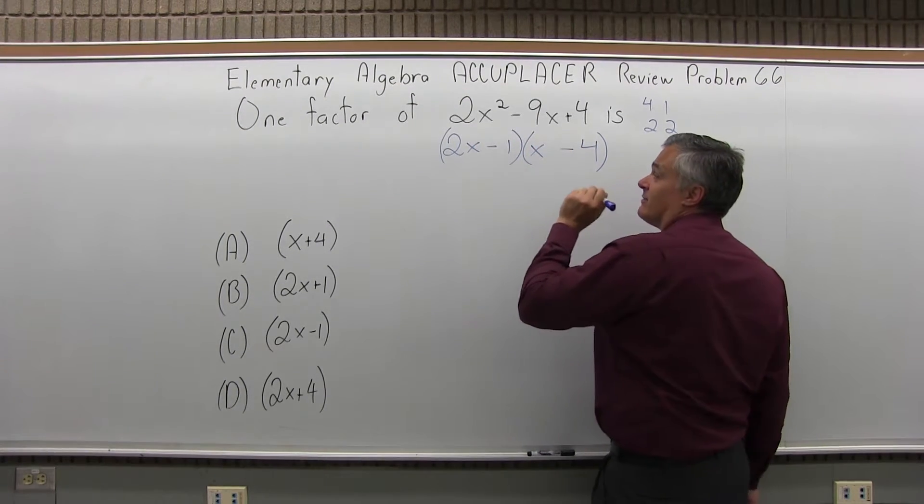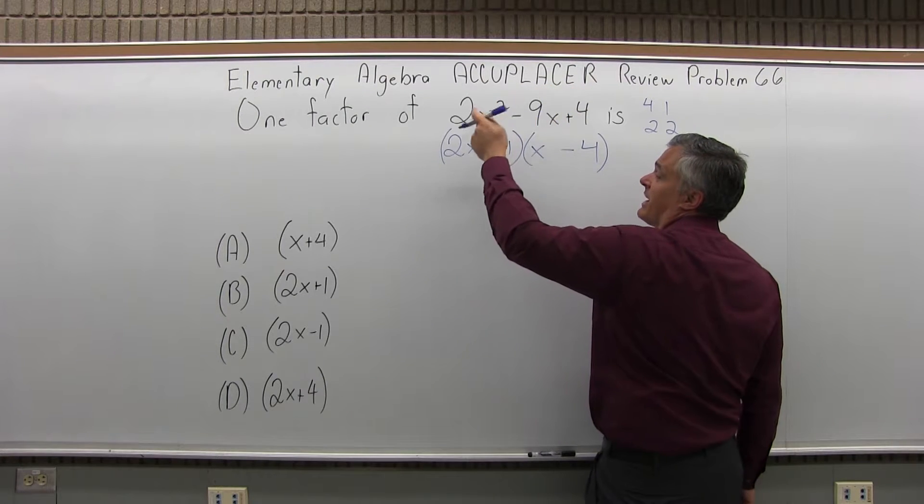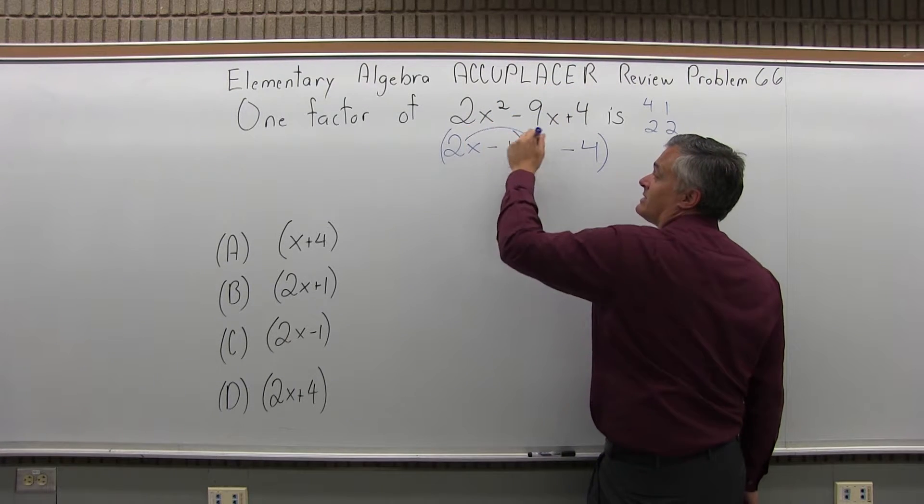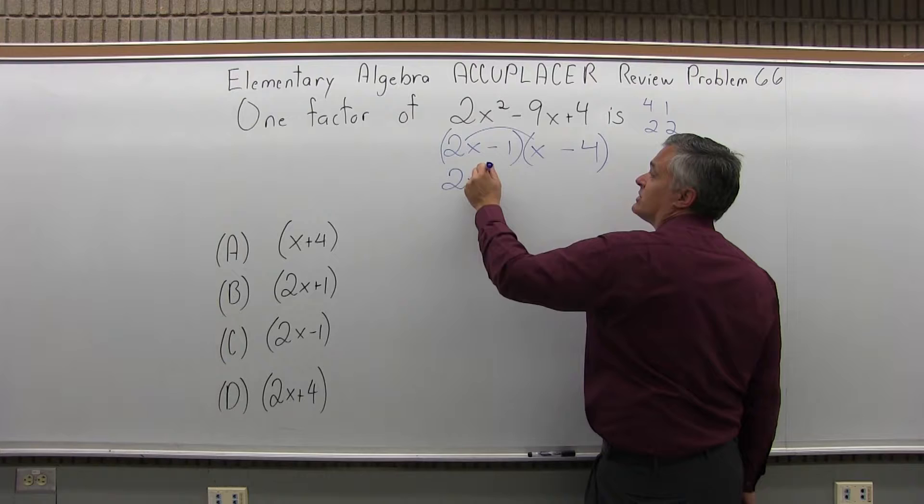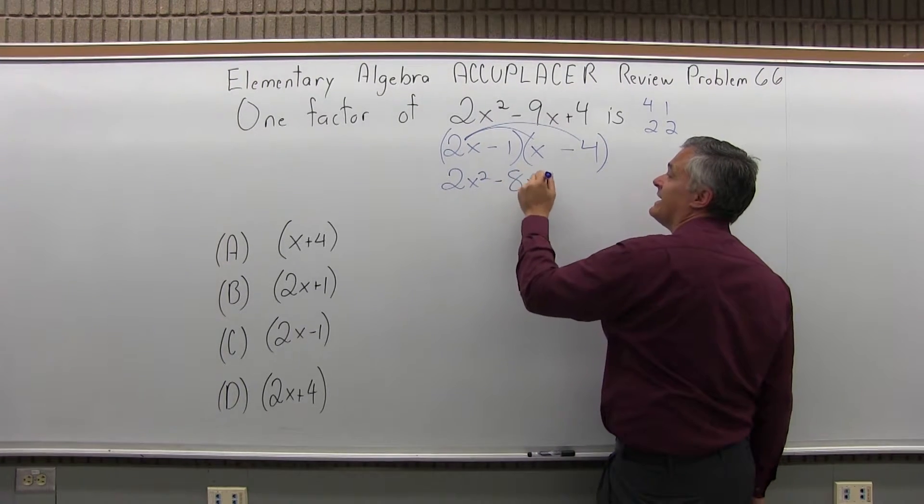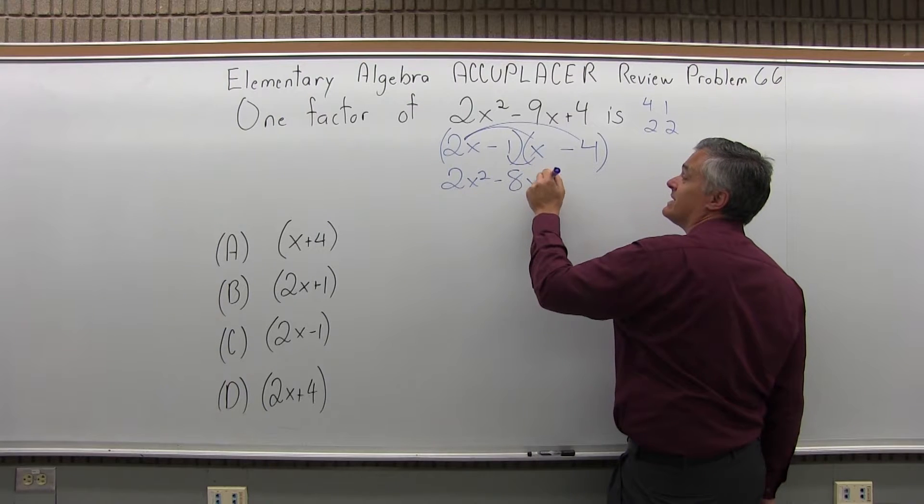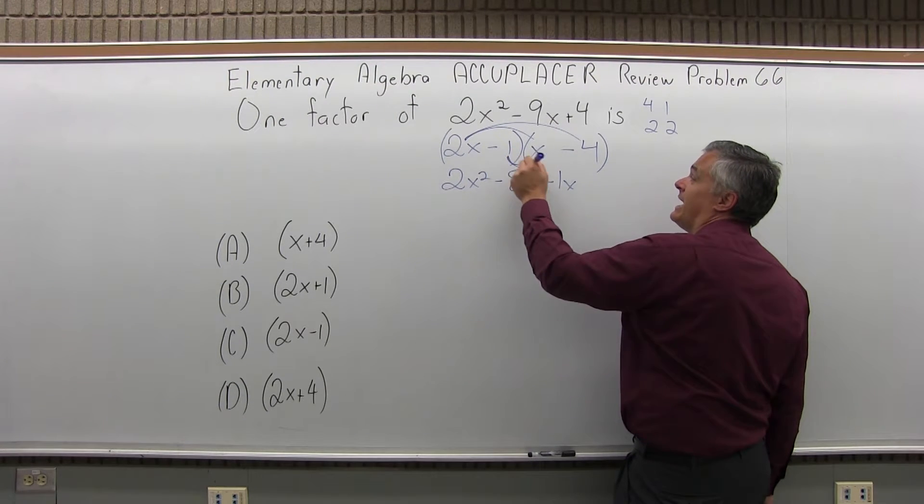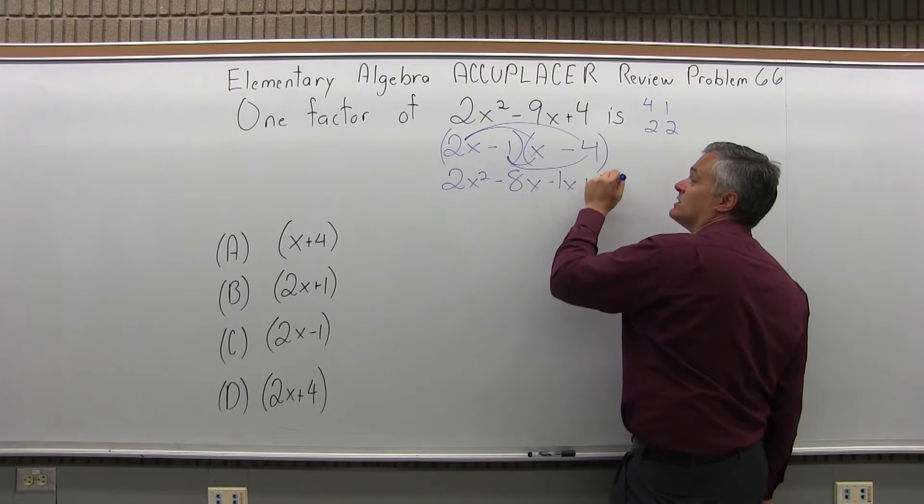Now let's check that. Let me multiply it out and see if it does give me back what I started with. 2x times x is 2x squared. 2x times negative 4 is negative 8x. Negative 1 times x is negative 1x. And negative 1 times negative 4 is plus 4.